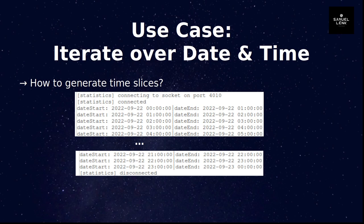In this use case we're going to iterate over date and time. The main question is how to generate time slices — you can see a start date on the left for each iteration and the end date on the right. Here I'm generating time slices of one hour for a complete day, from the 22nd of September until zero hours on the 23rd. This is useful when you need to get data from a database or another system based on a date range.